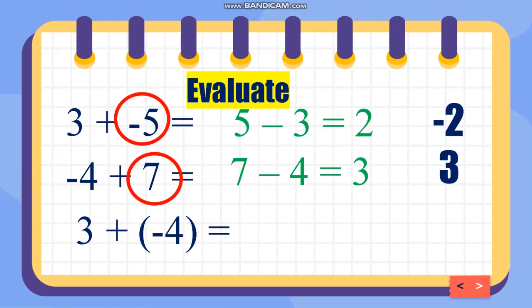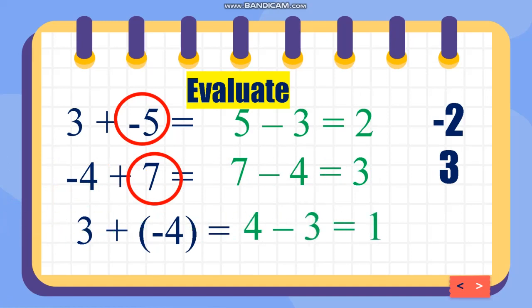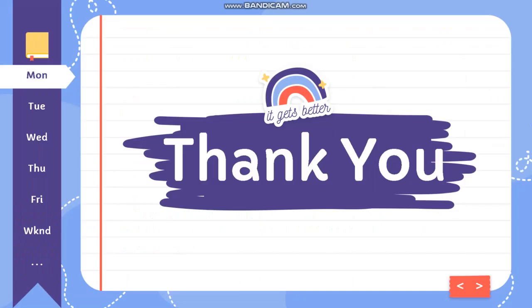Another example: 3 plus negative 4. The signs are different, so subtract: 4 minus 3 is 1, and the larger number is 4 which is negative. That's why the answer is negative 1. That's it — thank you so much.